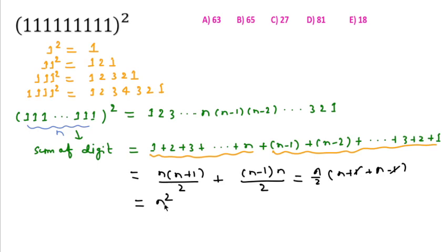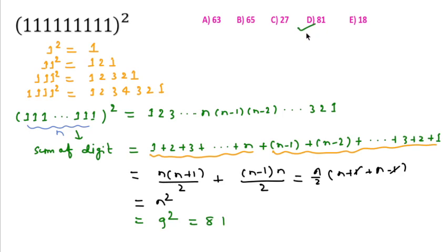So the sum of digits for n-digit 1s squared is n². For 9-digit 1s squared, the sum of digits will be 9² = 81. So option D is correct.